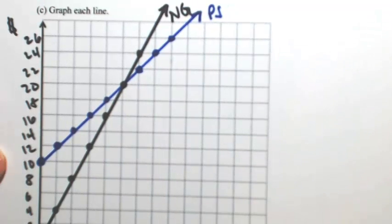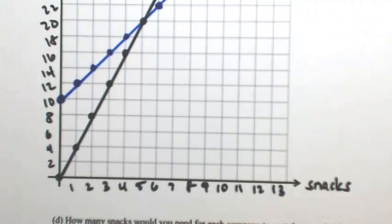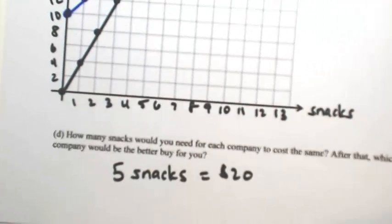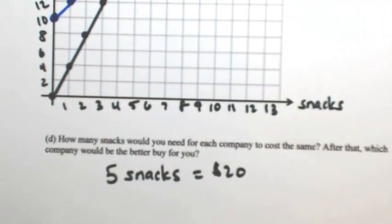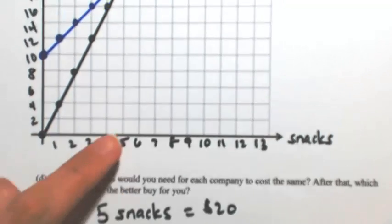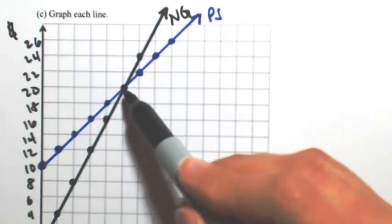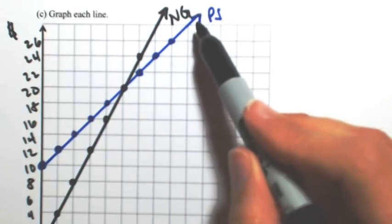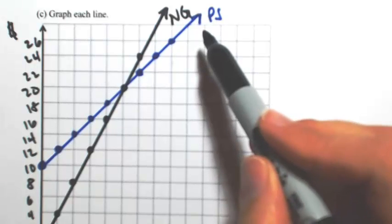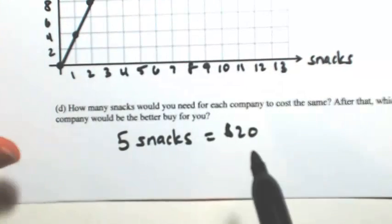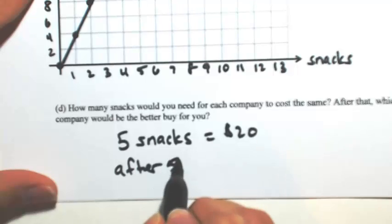How many snacks would you need for each company to cost the same? Well, it's going to be 5 snacks, because that's going to cost you $20. After that, which company would be the better buy for you? Let's look at the lines. After 5, I would assume you want to pay less money. The blue line is actually going to cost you less money the more snacks you buy. So that means Pure Snacks, even though it charges a membership fee, is still going to cost less after you buy 5 snacks.